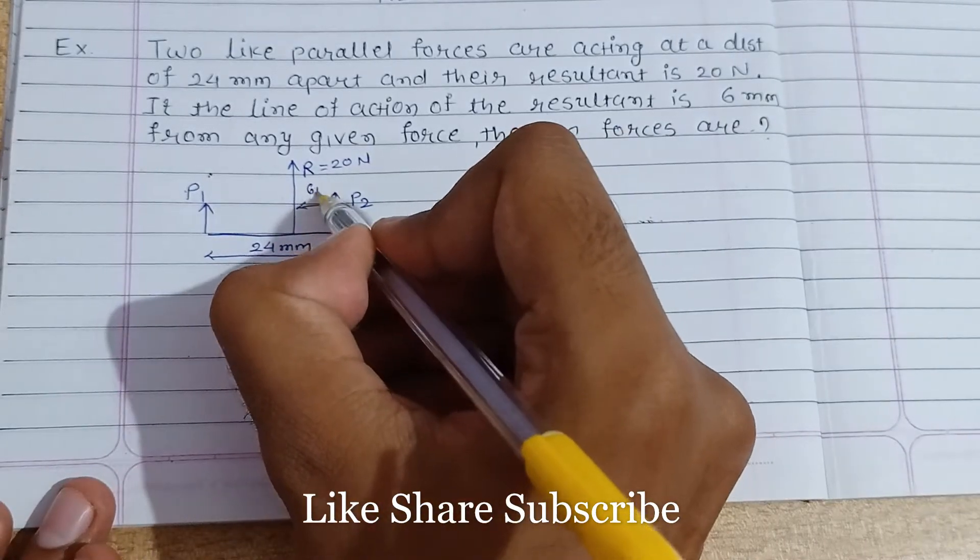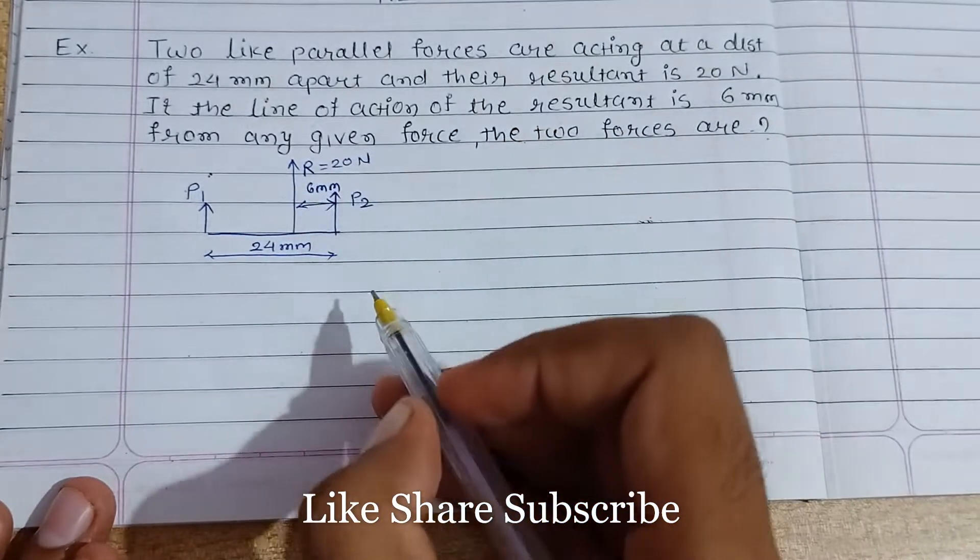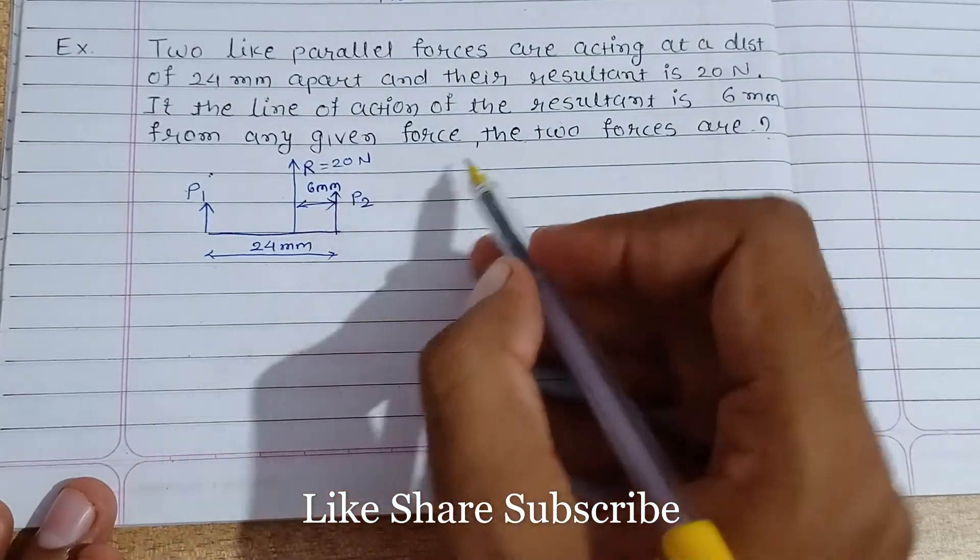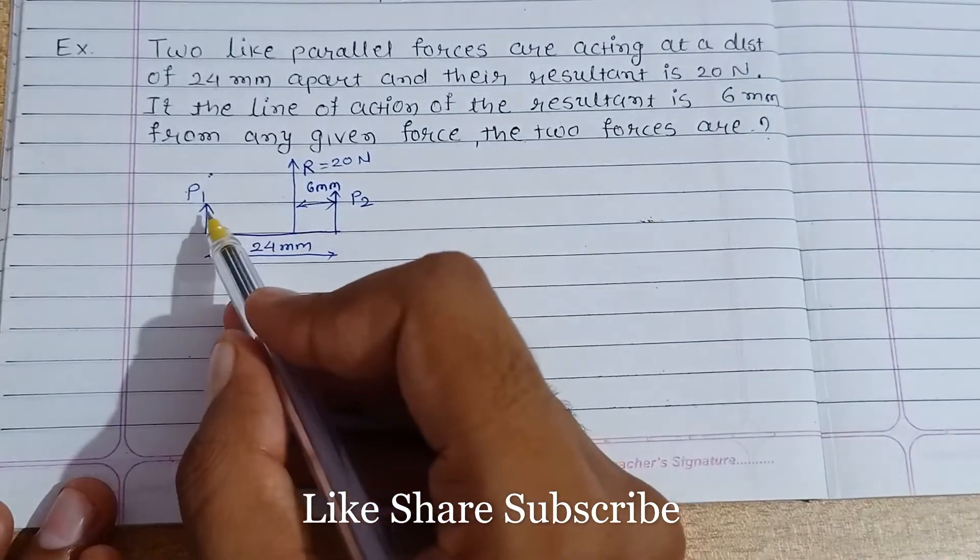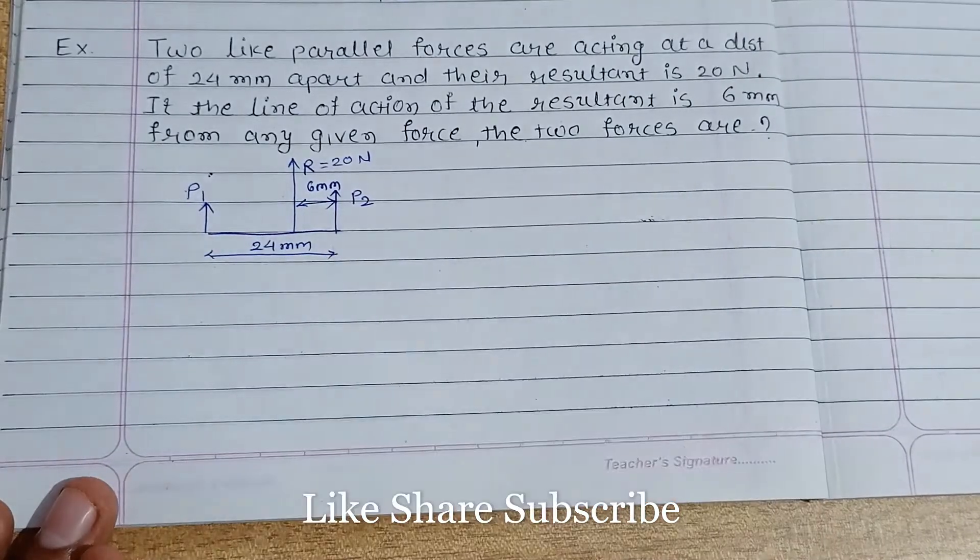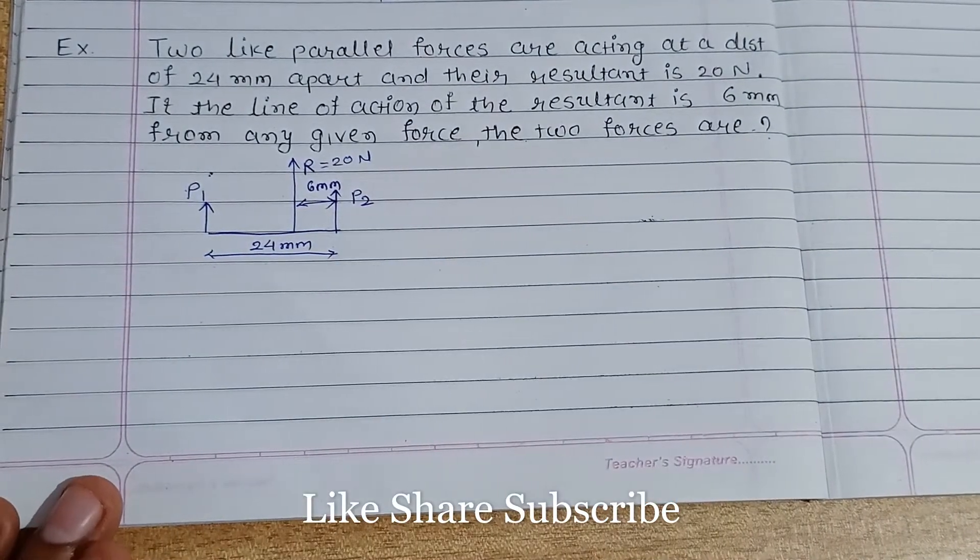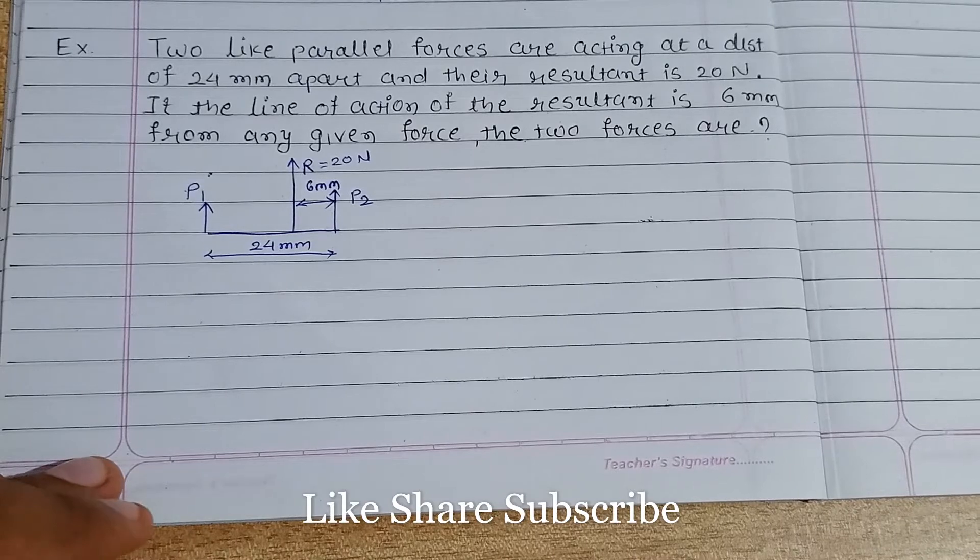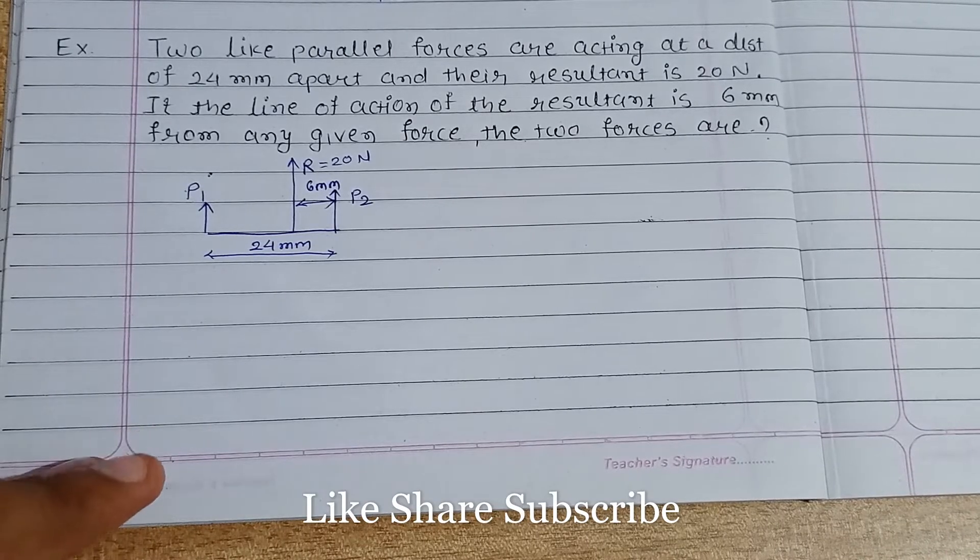Let's say line of the resultant force is 6 mm from any given forces. The two forces are - so we have to find the magnitude of P1 and P2. Try to solve this problem by yourself. Whenever you are ready, you can continue with this video.